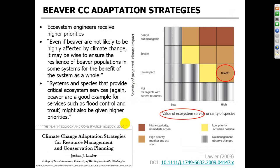Back to the Lawler paper, which articulated this quite nicely and actually used beaver as an example. What's presented here is his conceptual model of the sorts of actions we may take depending on the severity of projected climate impact on some system or species, and then either the value of that ecosystem service or the rarity of the species. In our case with beaver, we're very interested in the ecosystem services they provide. We know they're not rare and they're quite resilient, which puts us in this high priority — 'monitor and act soon' — stage. He argued that ecosystem engineers should receive high priority: 'Even if beaver are not likely to be highly affected by climate change, it may be wise to ensure the resilience of beaver populations in some systems for the benefit of the system as a whole.'